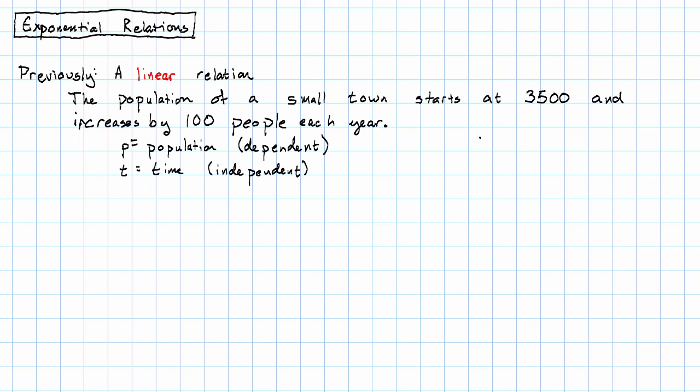So at time 0, there are 3,500 people. At time 1, there are 3,600 people. At time 2, there are 3,700 people, and so on.